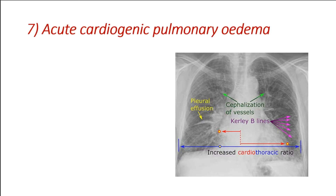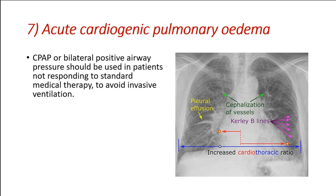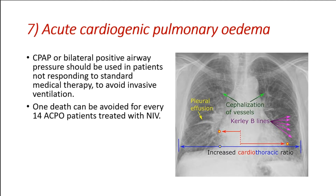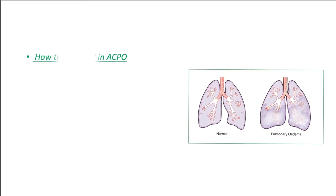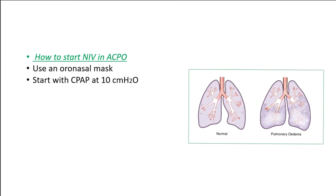Acute cardiogenic pulmonary edema: CPAP or bilateral positive airway pressure should be used in patients not responding to standard medical therapy, to avoid invasive ventilation. One death can be avoided for every 14 ACPO patients treated with NIV. When to start NIV in ACPO: respiratory rate greater than 25 breaths per minute, PaO2/FiO2 less than 200 mmHg, or SpO2 less than 90%. How to start: use an oronasal mask, start with CPAP at 10 cm H2O.